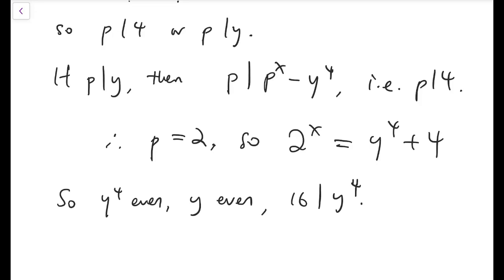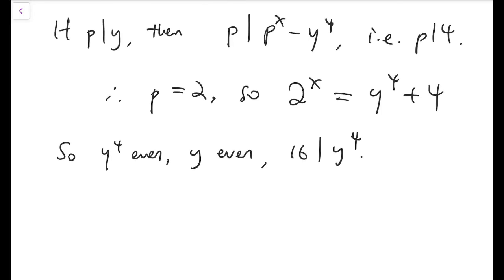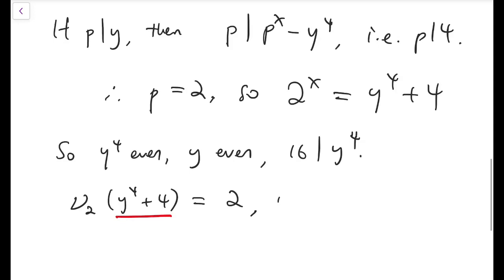Now, we take a look at the 2-adic valuation of both sides. It sounds like a very fancy term, but the meaning is simply the highest power of 2 that can divide that expression. So the 2-adic valuation of y to the 4 plus 4 is now 2, because 2 to the 2 is the highest power of 2 that would divide this. y to the 4 is a multiple of 16, and so this thing is congruent to 4 mod 16. And so, x can only be 2.